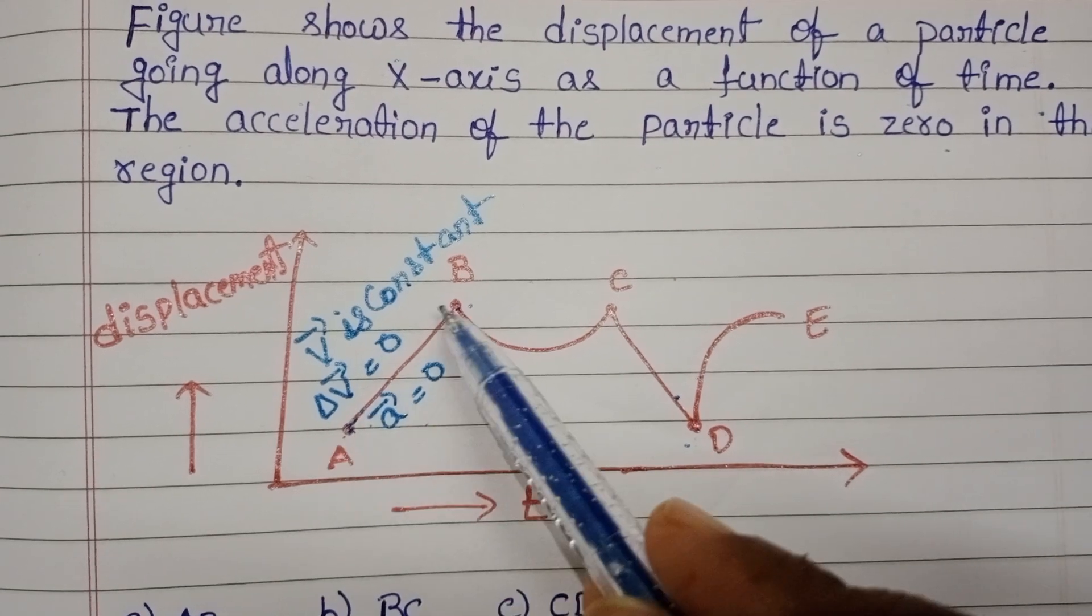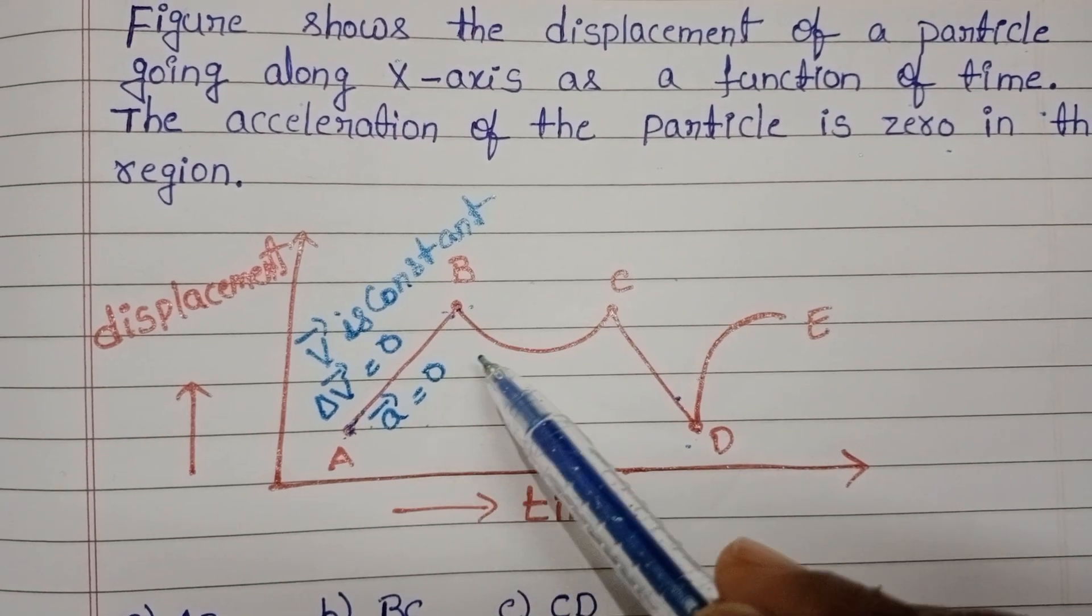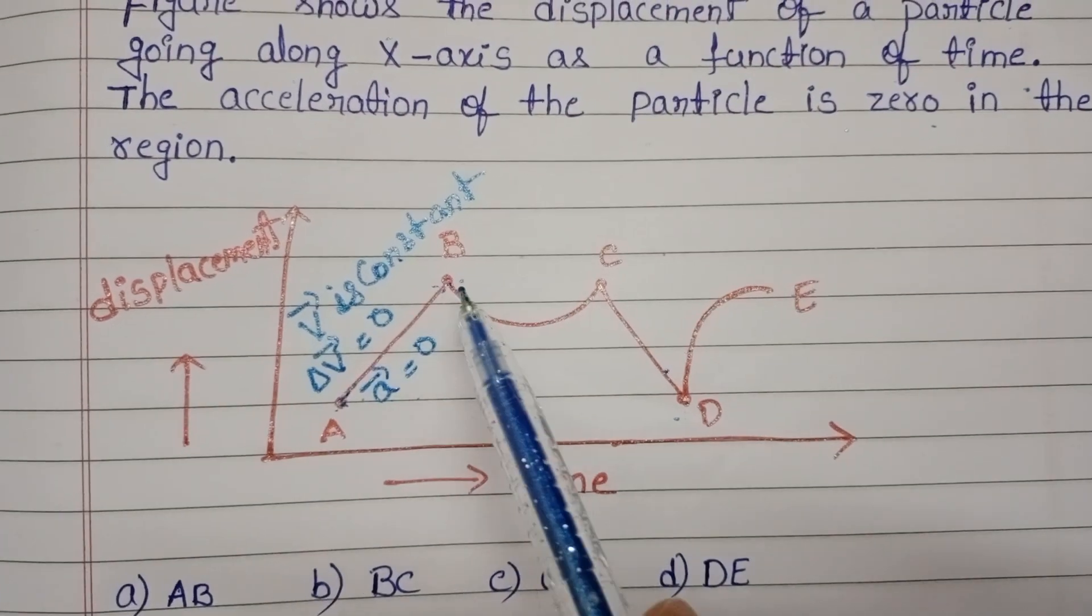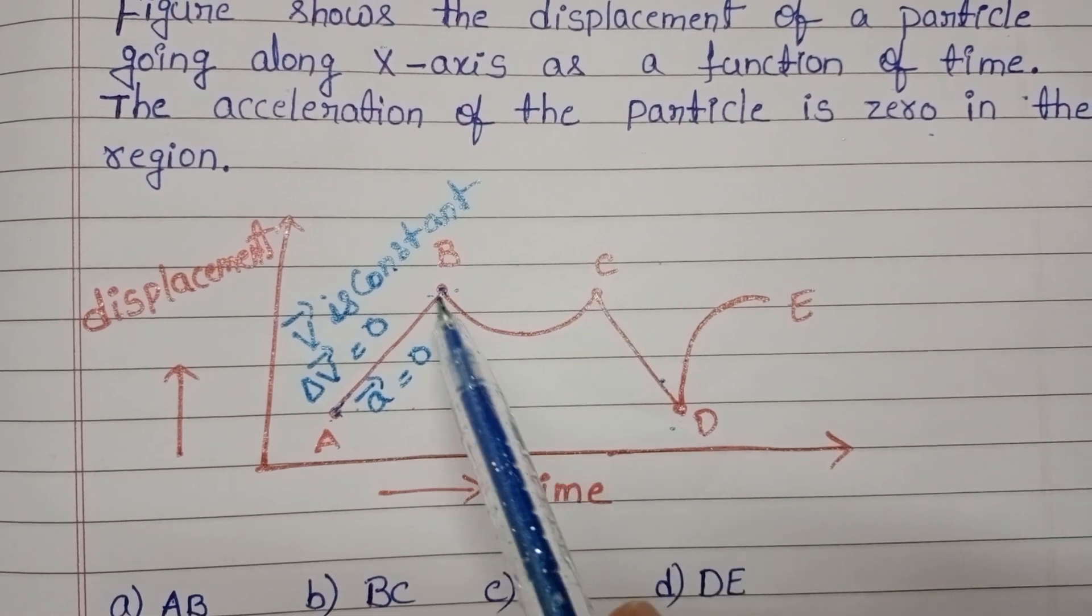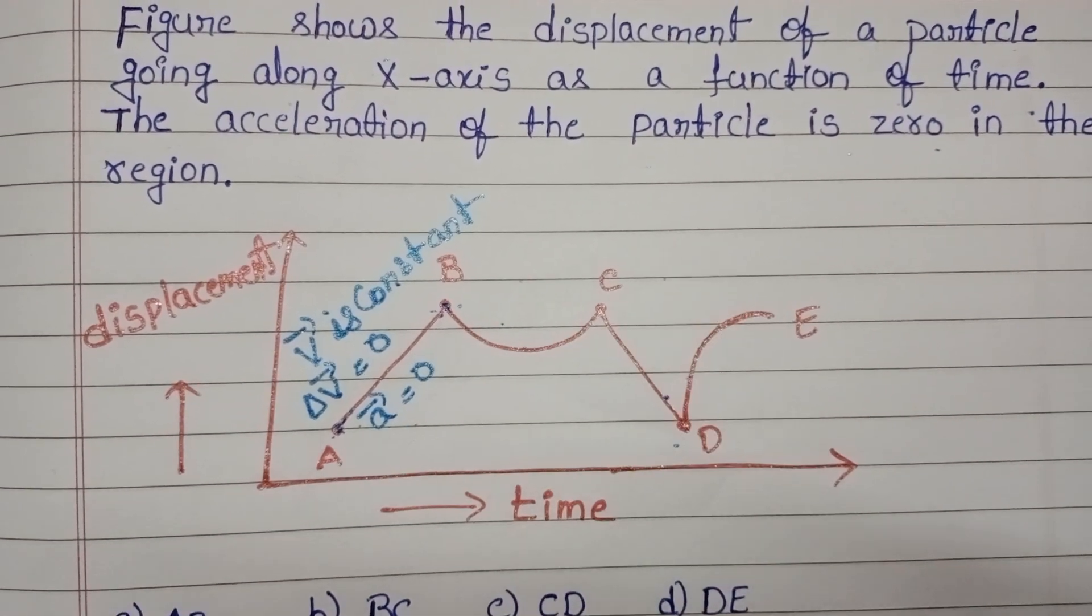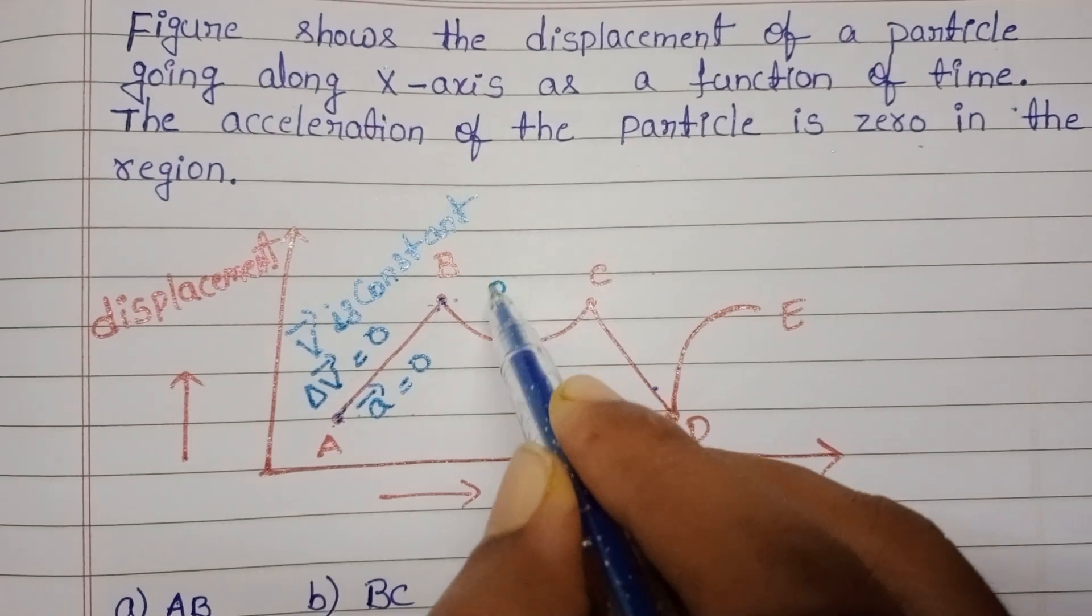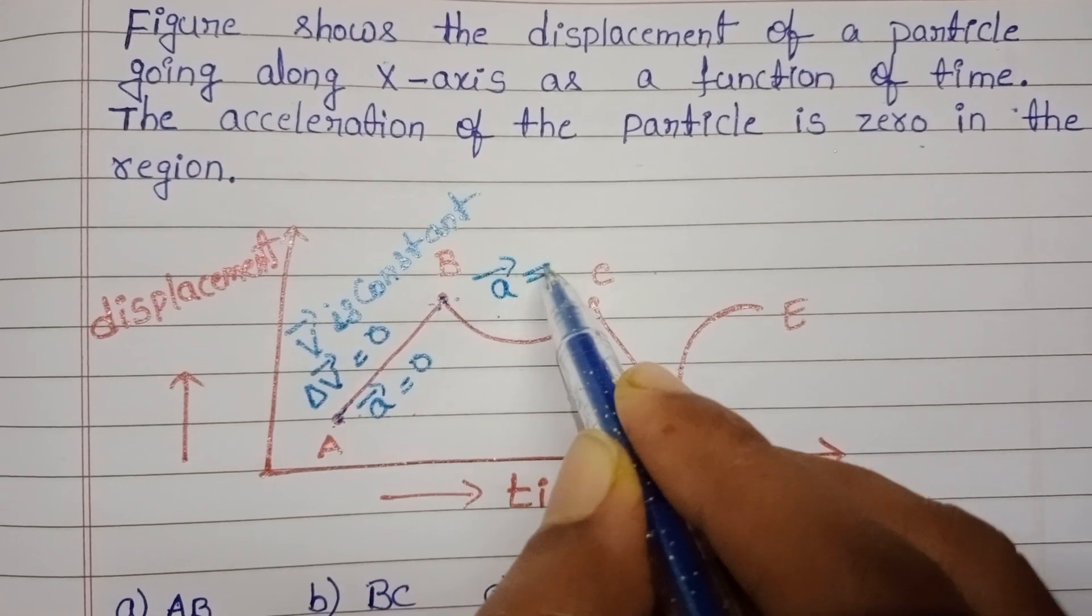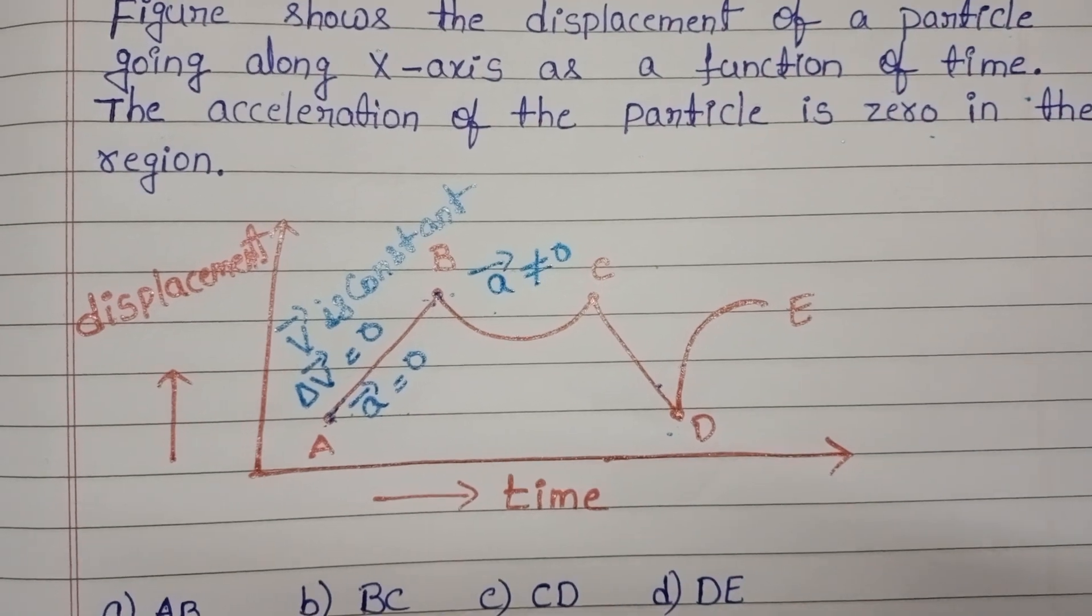So in AB region acceleration is zero. And from B to C, non-uniform motion means velocity is not constant. When velocity is not constant, then acceleration is not equal to zero.